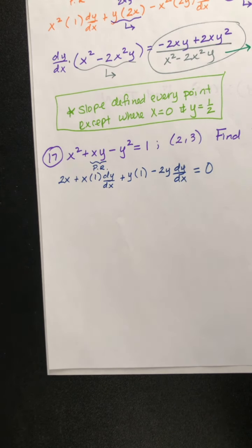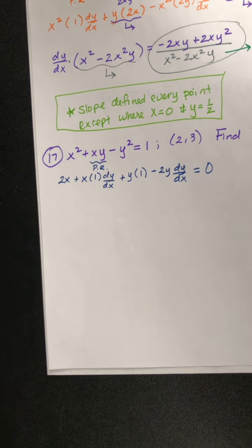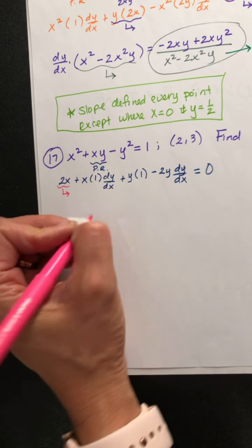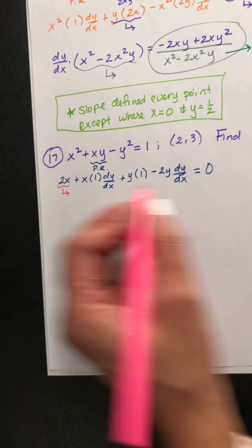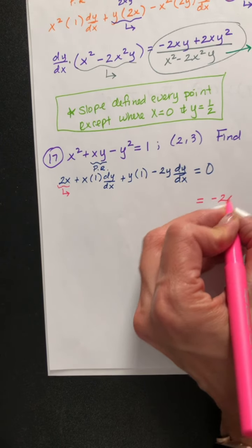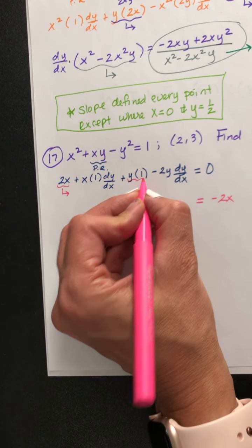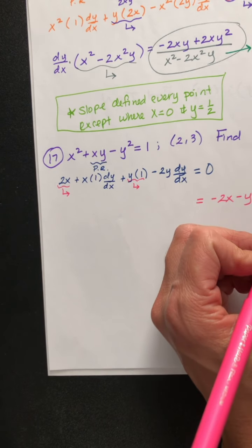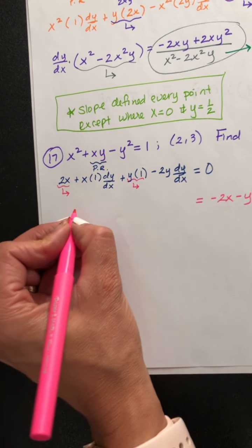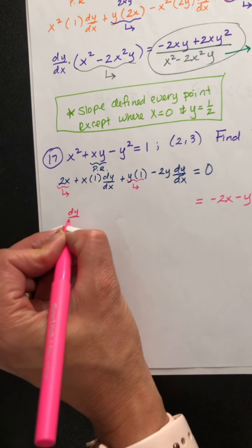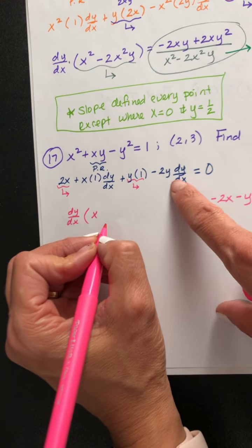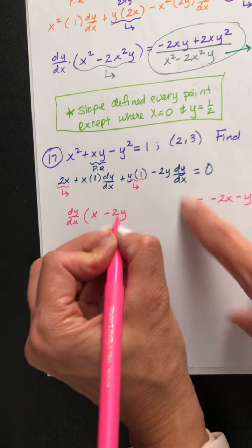Now we need to get the dy dx's by themselves on the left. That means we move 2x to the other side, giving negative 2x, and we also subtract the y, giving minus y. On the left, we factor out the dy dx, and we'll have x and negative 2y.